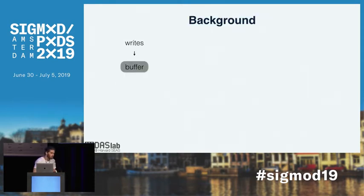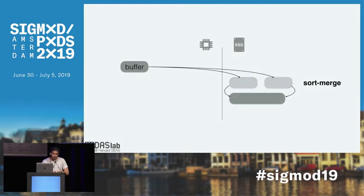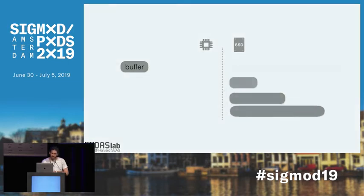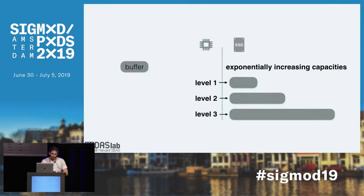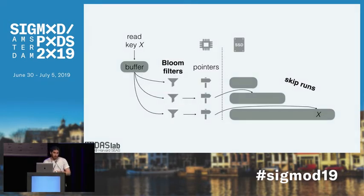I'll start off with some background on how LSM-Tree works. LSM-Tree buffers all application writes in main memory. Whenever this buffer fills up, we sort it by key and flush it to storage as a sorted array called a run. LSM-Tree sort-merges runs in the background, organizing them into levels of exponentially increasing capacities. In modern implementations, you typically have fence pointers in memory, which store the first key of every block of every run, allowing each run to be accessed with just one IO. We also typically have bloom filters, which allow point reads to skip accessing runs that don't contain the key you're looking for.